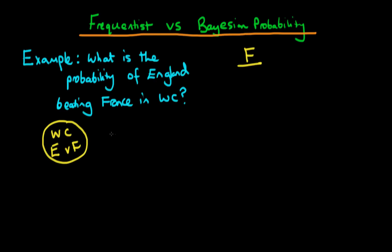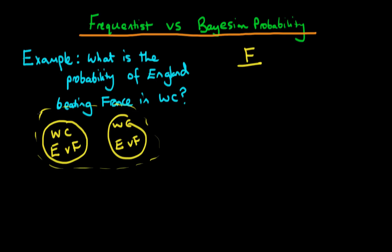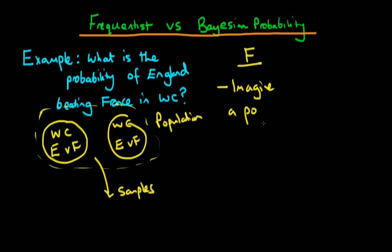Forget for a moment that this is completely nonsensical, but what we could imagine is that we've got all these possible games — whatever that particular means — and we have them together in some sort of imaginary population. So we have this population of all the games which England could ever play against France. Then what we would need to do is draw from this imaginary population — imagine sampling from this imaginary population.